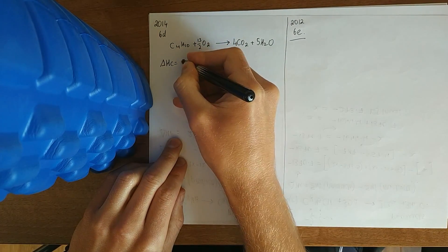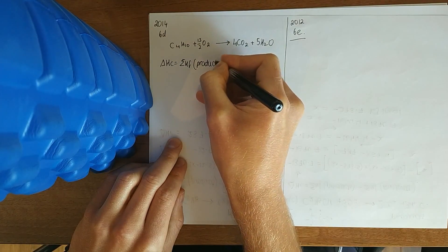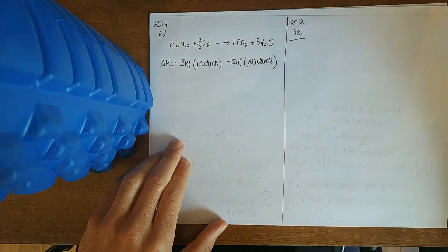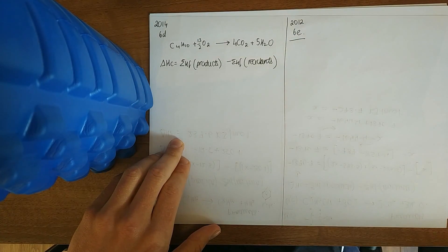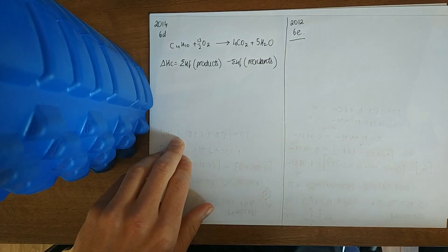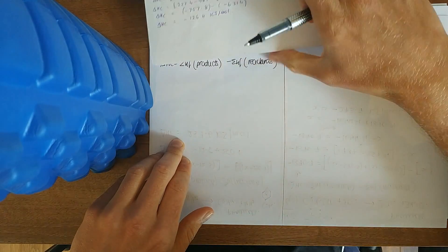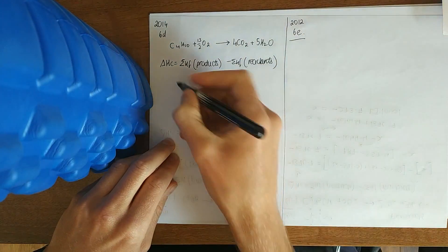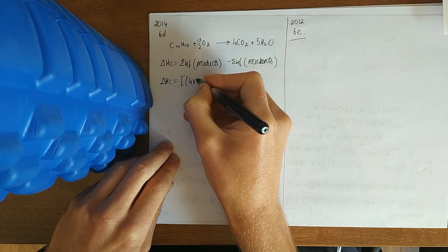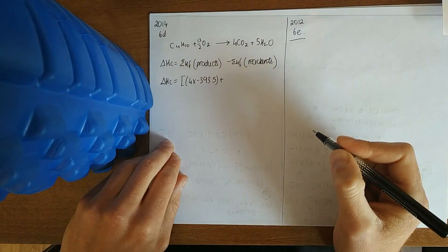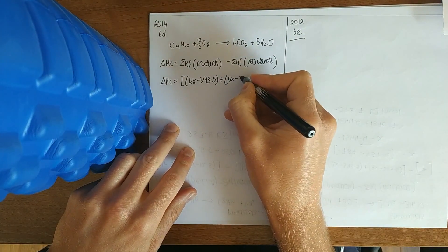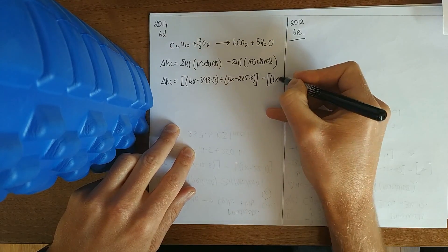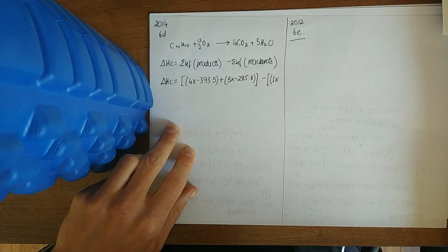Write down your equation: heat of combustion equals heat of formation of products minus heat of formation of reactants. Calculate the heat of combustion of butane. Given the heat of formation of carbon dioxide, water, and butane are those values: 4 times minus 393.5 for CO2, plus 5 times minus 285.8 for water, minus our reactant which is just one of them — butane at minus 125.7.